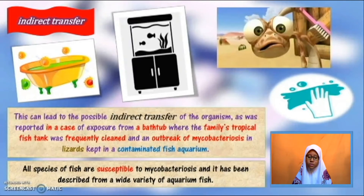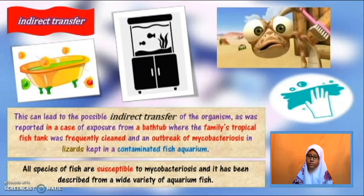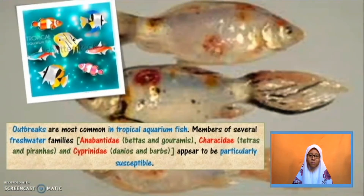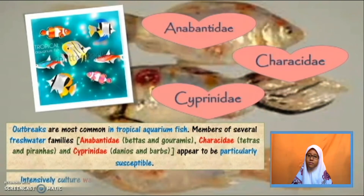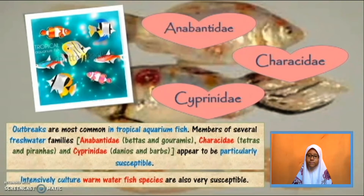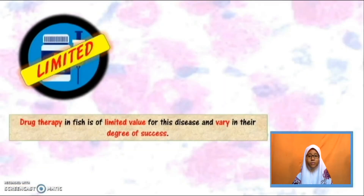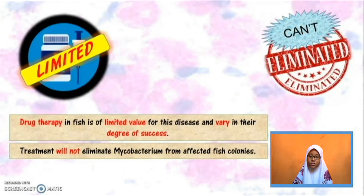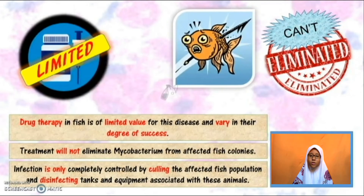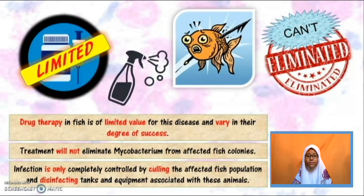All species of fish are susceptible to mycobacteriosis and it has been described from a wide variety of aquarium fish. Outbreaks are most common in tropical aquarium fish. Members of several freshwater families such as Anabantidae, Characidae and Cyprinidae appear to be particularly susceptible. Drug therapy in fish is of limited value for this disease and varies in degree of success. Treatment will not eliminate mycobacterium from affected fish colonies. Infection is only completely controlled by culling the affected fish population and disinfecting tanks and equipment.